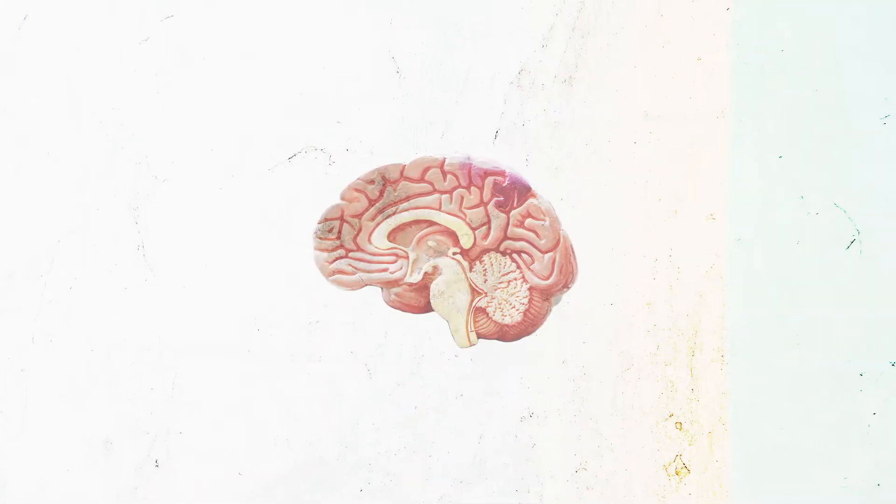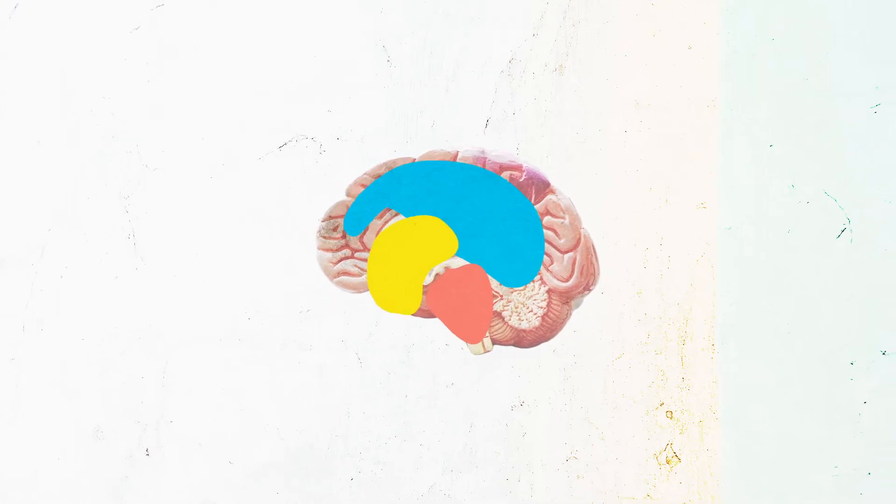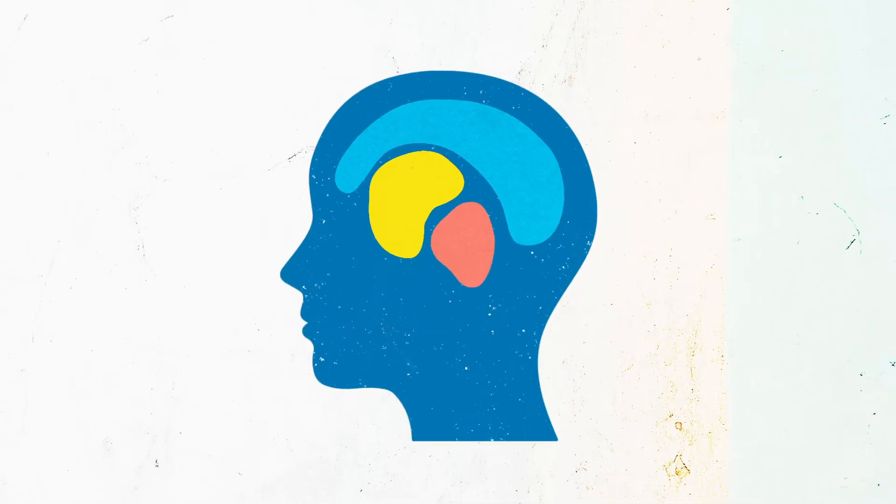The key to really understanding the teenage brain is to understand it's still under construction. So it might be helpful to understand the structure of your brain, that you really have three brains inside your head.